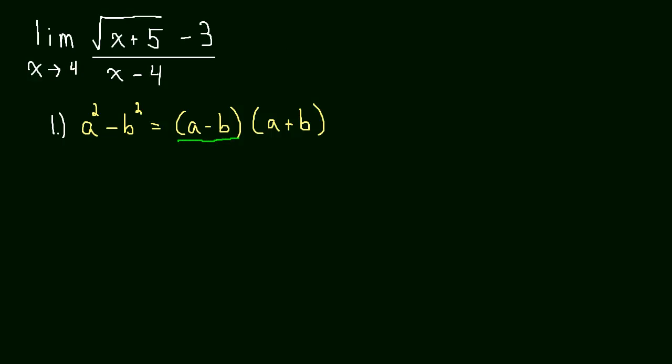Let me show you over here. If we say a equals the square root of x plus 5, and b equals 3, then our numerator is a minus b. And we know that if we just go ahead and multiply by a plus b, what's going to happen is that those two terms will square. And why is that helpful for us?